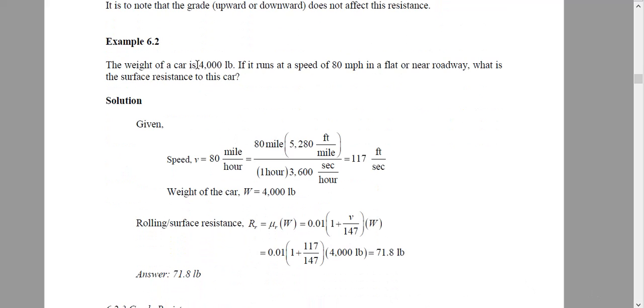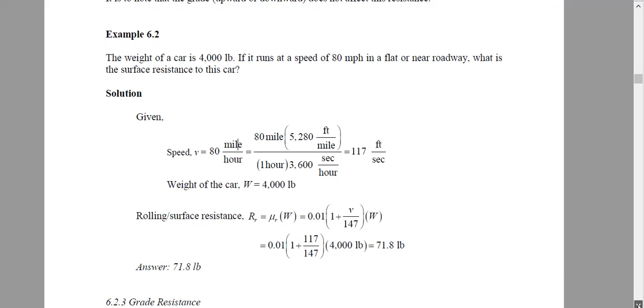So a problem is given: the car weight is 4 kip, speed is 80 mile per hour, what is the surface resistance? So I converted my speed into feet per second. You can use this conversion or simply multiply by 1.47. Then weight is given simply. The equation is known. We found the rolling coefficient using this equation and we got it. It's very straightforward, just plug in.